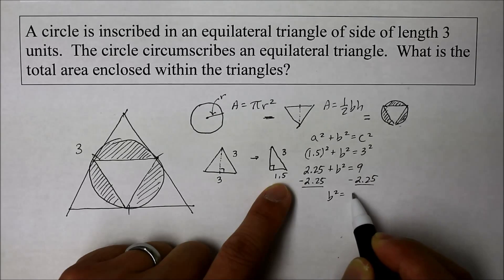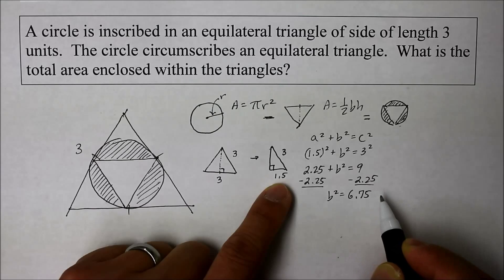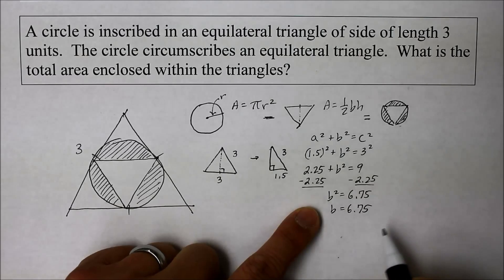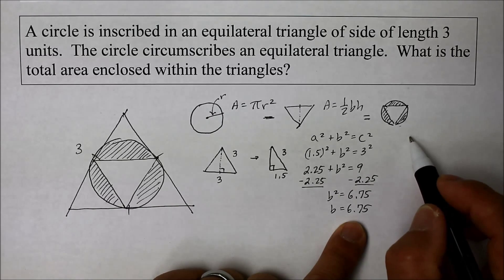So b squared is equal to 6.75. Now we want to square root that. So what's the square root of 6.75? Let's do a factor tree to find the prime factorization for this number.